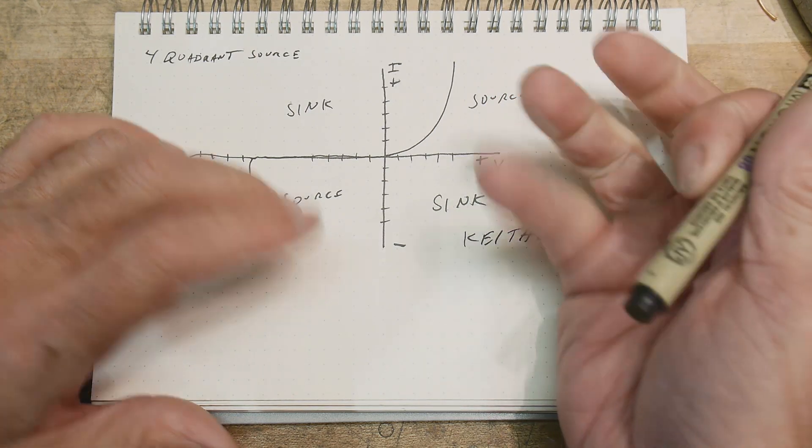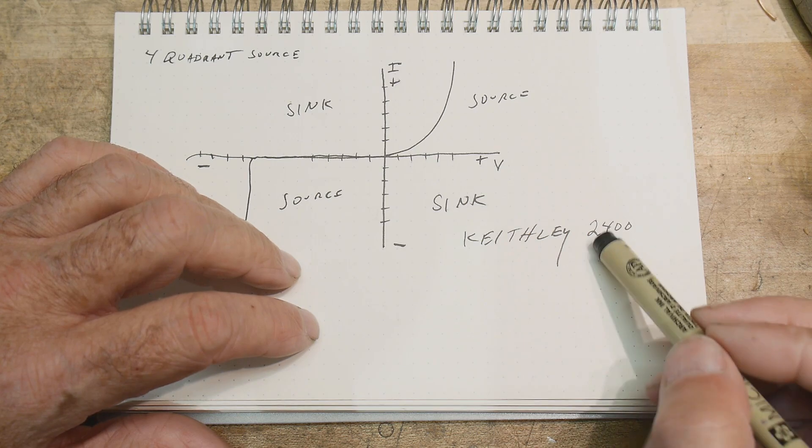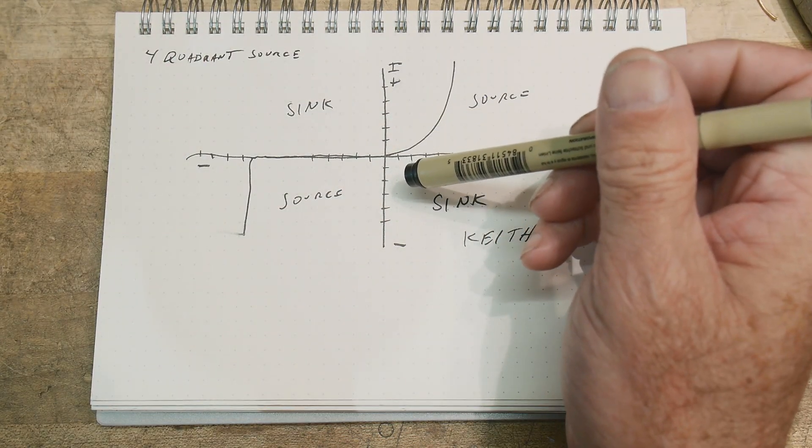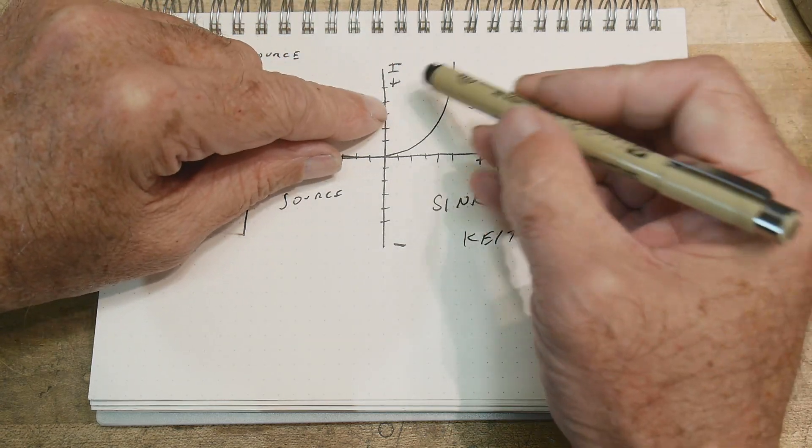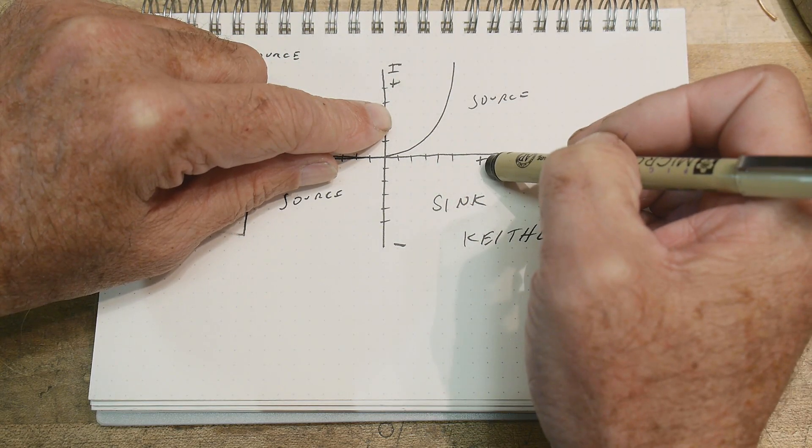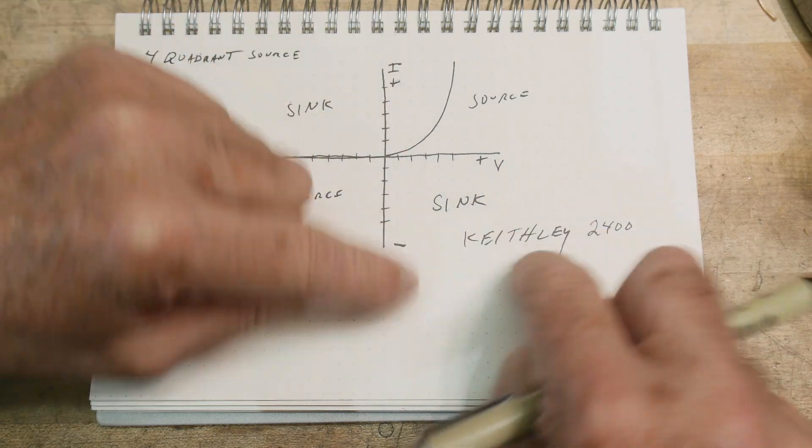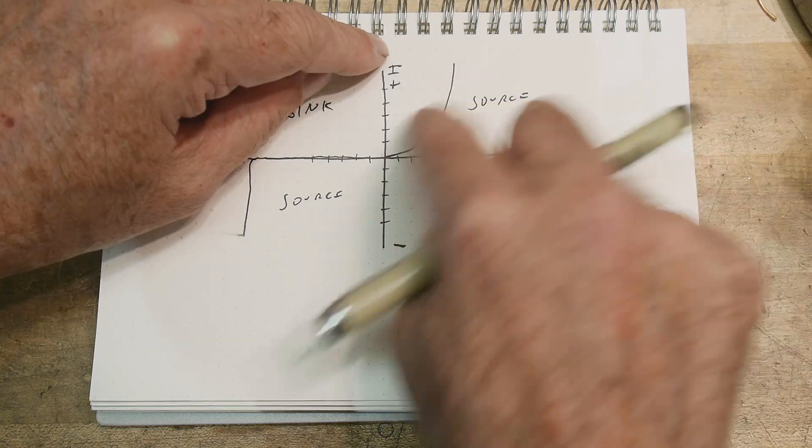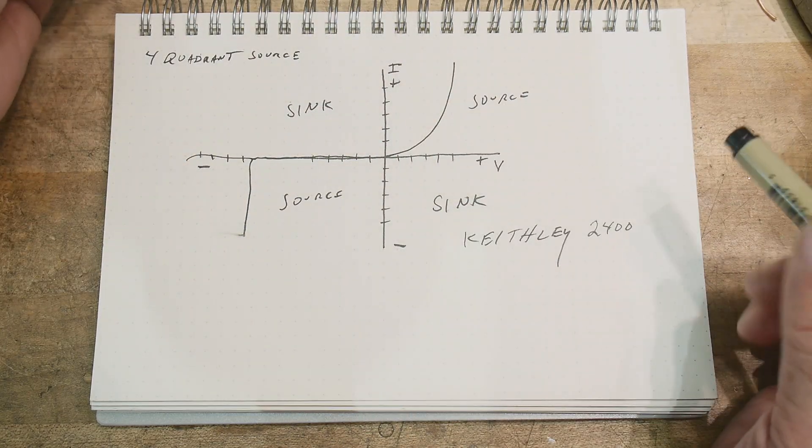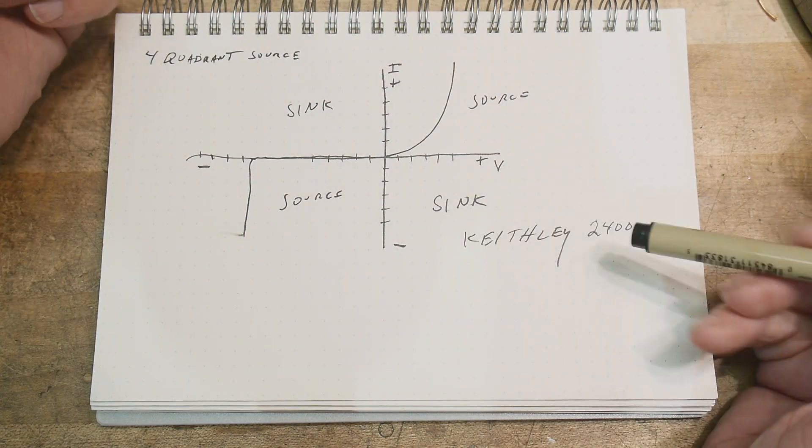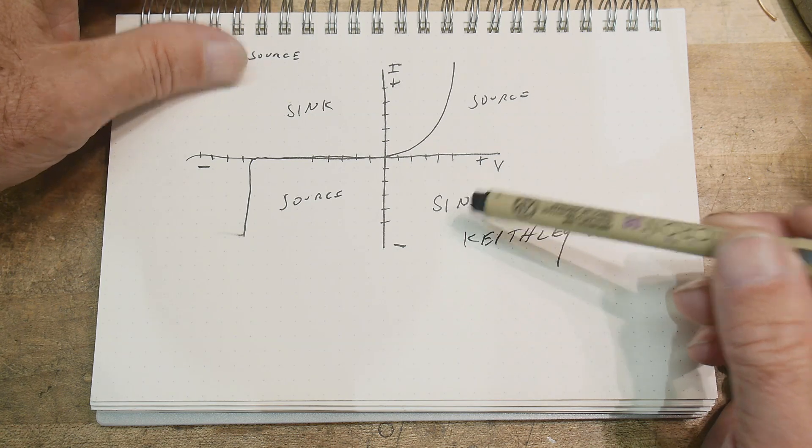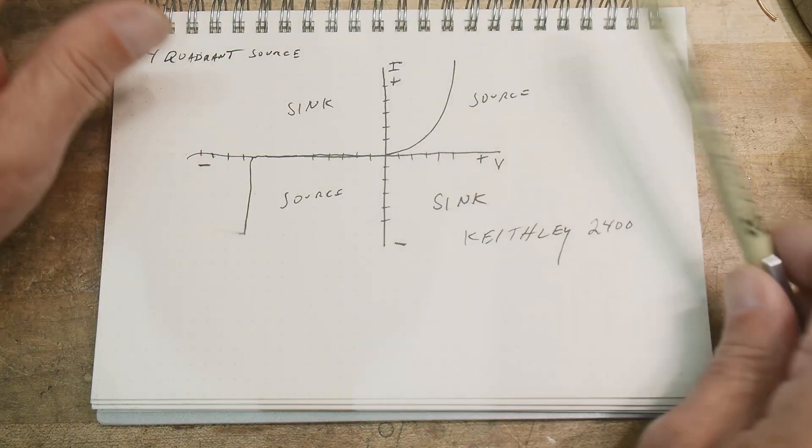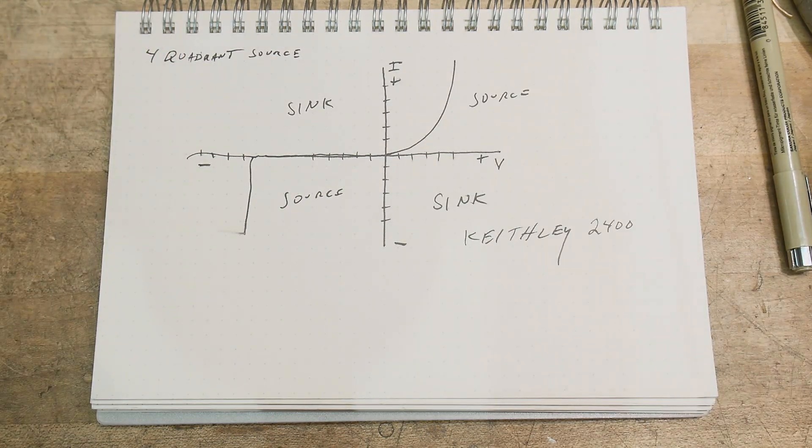Now if you can't afford a nice Keithley 2400, a lot of times you can just use your power supply. Most of the modern power supplies read out voltage and current at the same time. And so they're sort of a source measurement device as well. Not as good, but they can get you part of the way there. But the point of this video is to take a look at a Keithley 2400 operating in the sink mode. So let's do that.